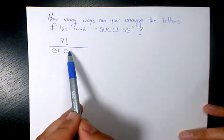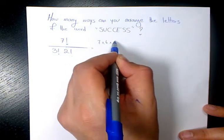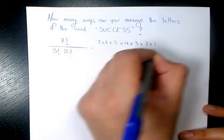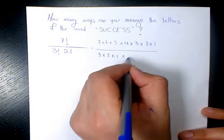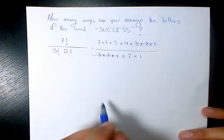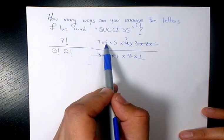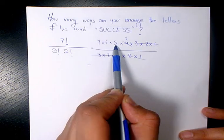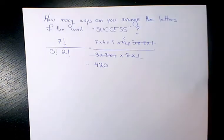So 7! divided by 3! and divided by 2!. Seven factorial is 7×6×5×4×3×2×1. Three factorial is 3×2×1, and two factorial is 2×1. Then you cancel out - this one, four cancels with this two to become two. So 6×7 is 42, 42×5 is 210, 210×2 is 420.